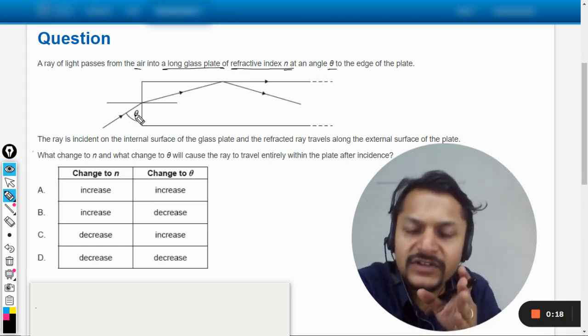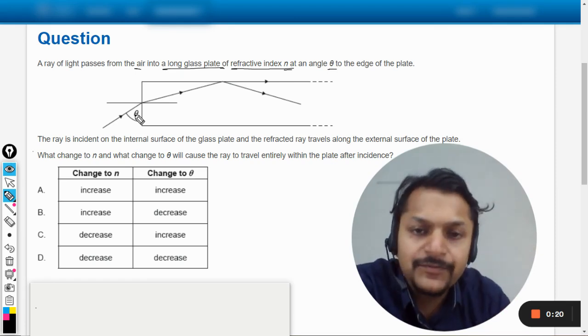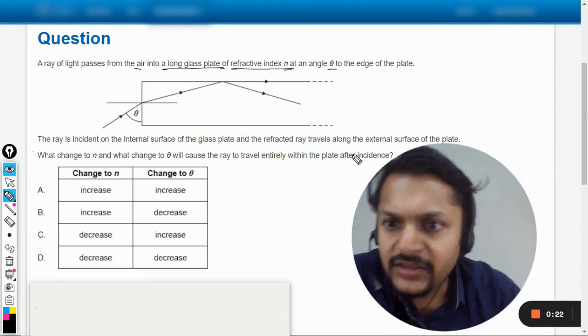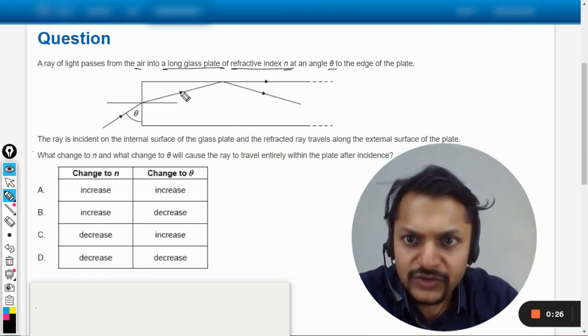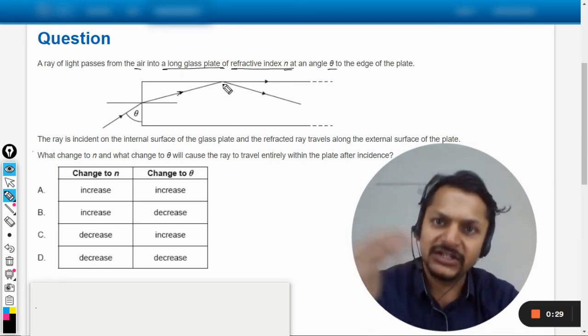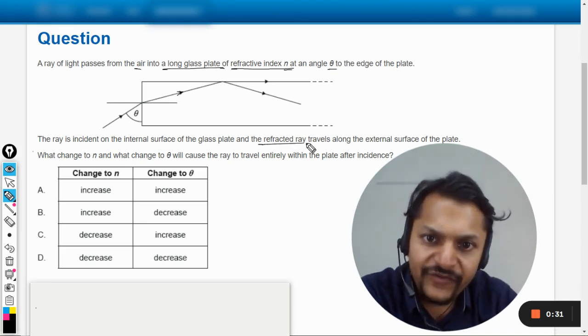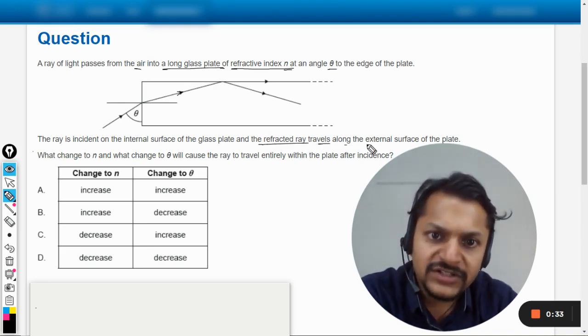Obviously the light will now enter into the glass at the edge of the plate. The ray is incident on the internal surface of the glass plate, and the refracted ray travels along the external surface of the plate.